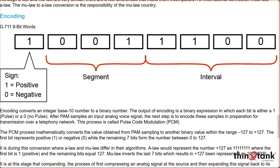The next step is to encode those samples to transmit them over our network — that process is called pulse code modulation. PCM converts the PAM signal we've sampled into a binary expression ranging from plus 127 to minus 127. The companding also occurs at this stage, where we compress the analog signal and then expand it back into its original analog waveform at the destination.